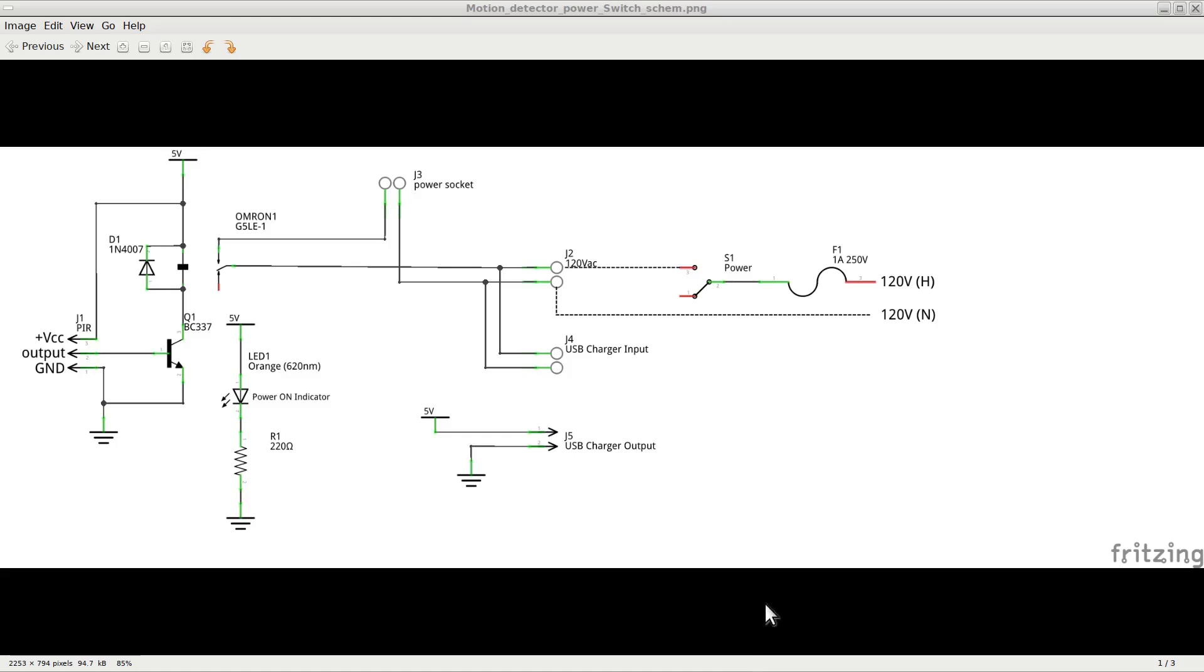This is the schematic I made to use the PIR motion detector. The detector is connected through pin header J1 on the left. The header provides the power supply for the detector on pins 1 and 3, and captures the output signal on pin 2. The signal from the detector goes to the base of transistor Q1, which pilots a relay used to control the light of the room. The 5-volt power supply for the transistor and the relay comes from an old USB charger.